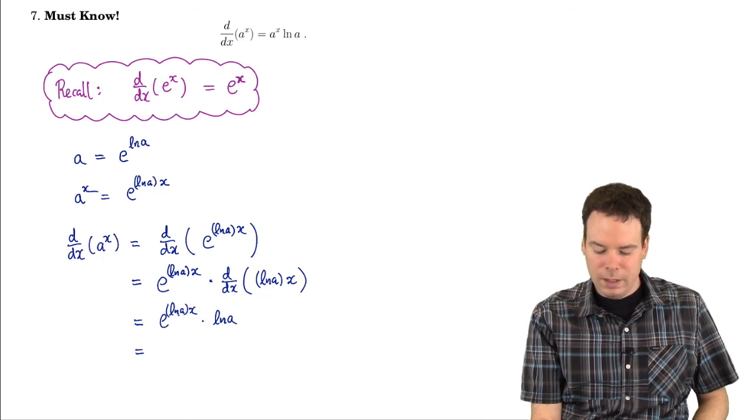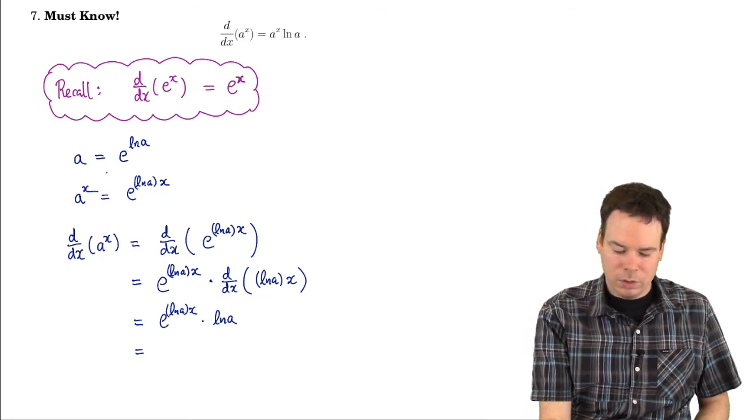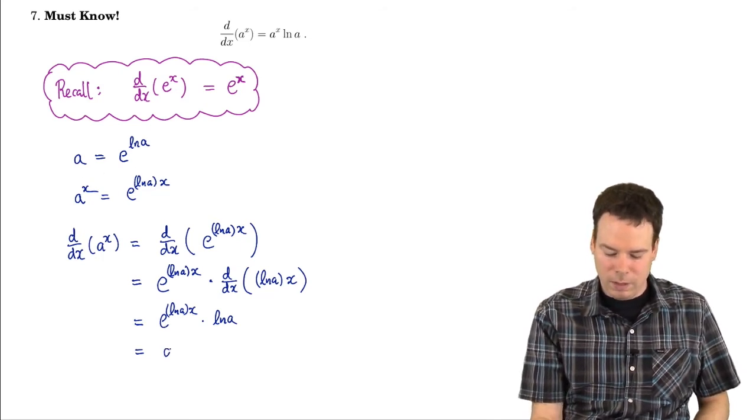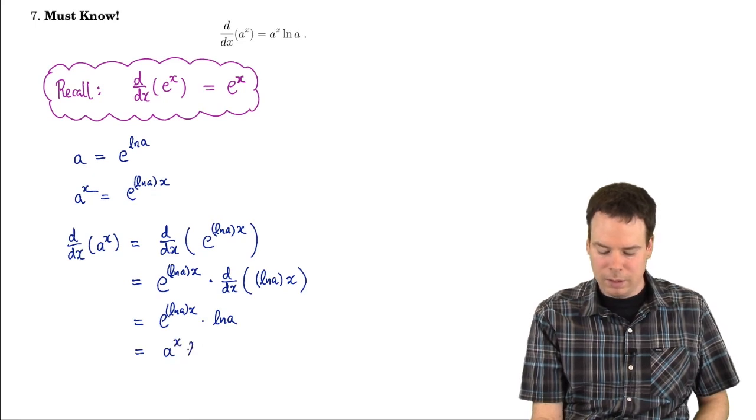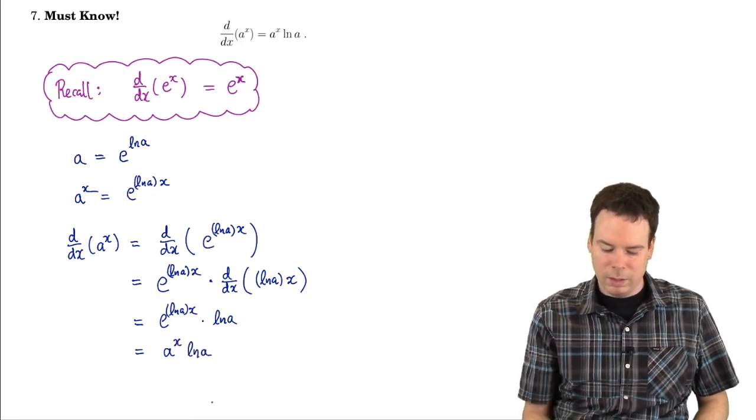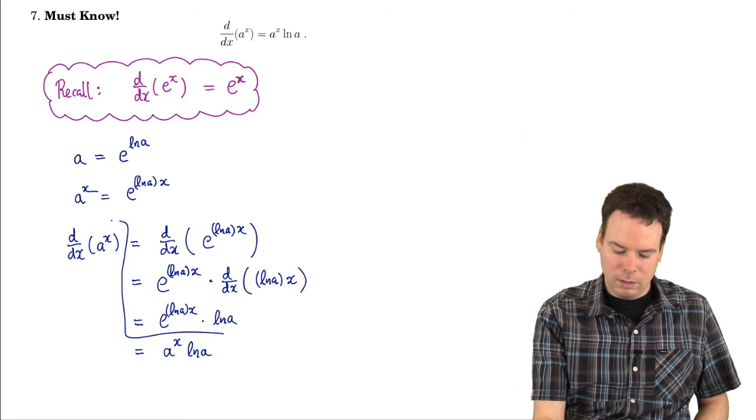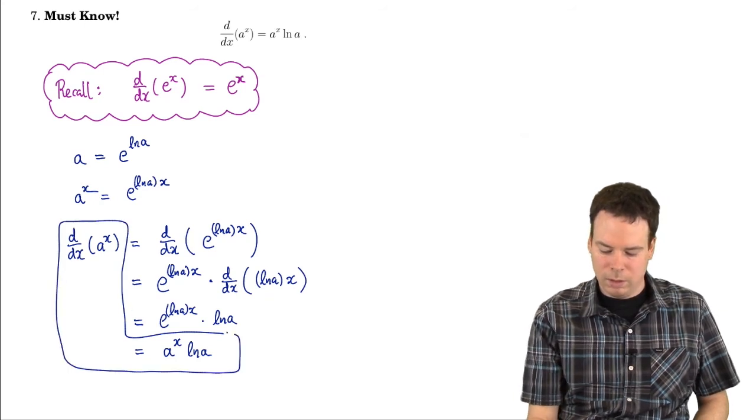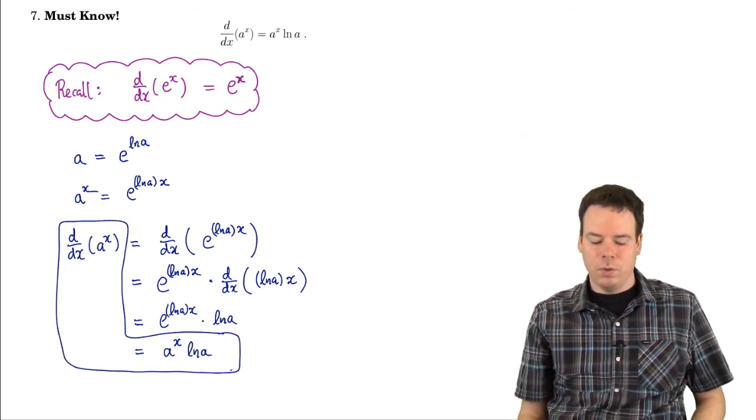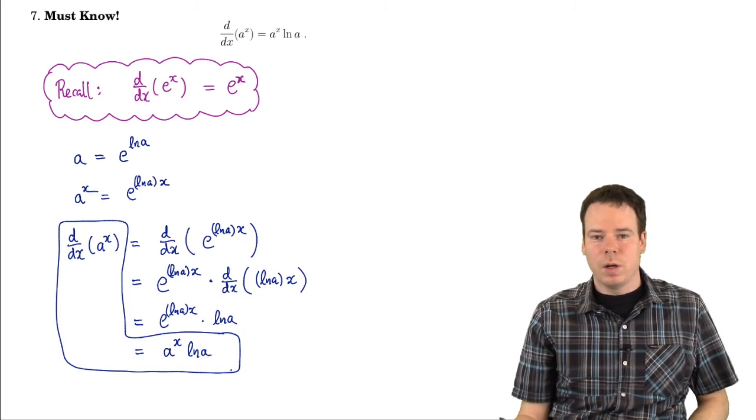Now this, e to the ln of a of x, well that was just our fancy way of writing a to the power of x. So I can rewrite it back as a to the power of x, and I get ln of a. And there we go. We get our differentiation rule for an exponential function of arbitrary base.